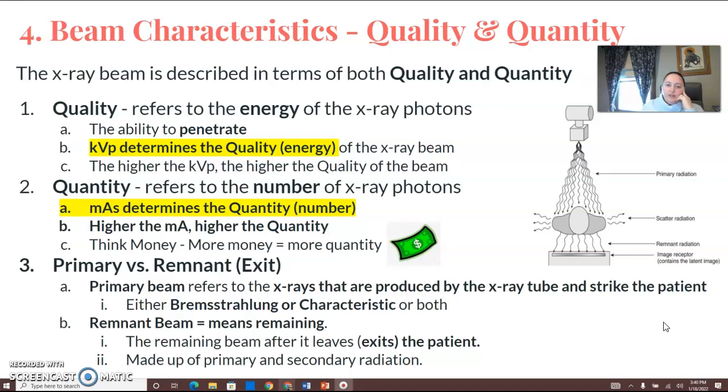Quality refers to the energy of the x-ray photons. It's the ability of the x-ray beam to penetrate the part. KVP determines the quality or energy of your x-ray beam. So however high or low you set your KVP is going to determine the energy or penetrability of your x-ray beam.